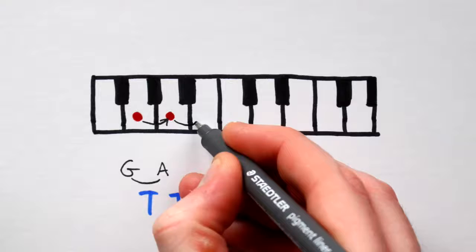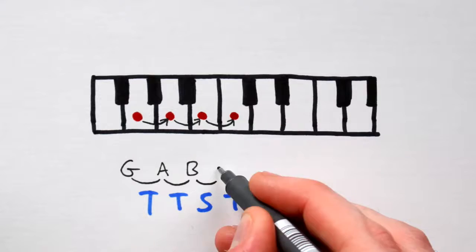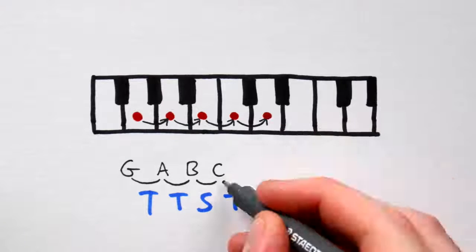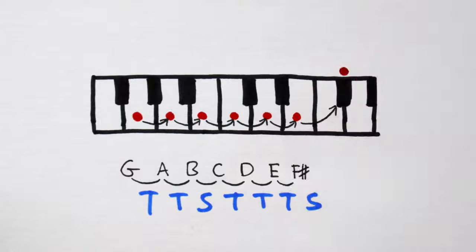Up a tone to A. Up another to B. Then up a semitone to C. Up a tone to D. Another to E. And another to F sharp. And we finish it all off with a semitone to get back home to G.